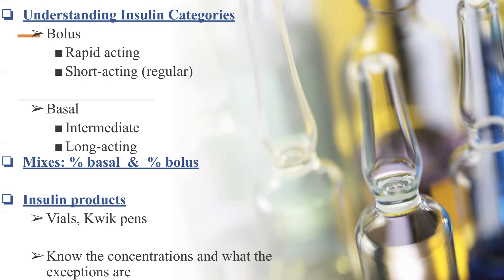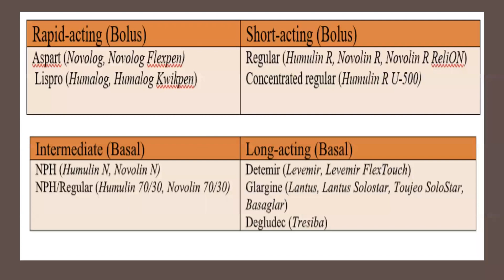We need to know the types of insulin products: vials and quick pens. We also need to know the concentrations and what the exceptions are. Looking at the categories, under rapid acting you need to know the brand and generic names. We have aspart, which is also Novolog, and the Novolog FlexPen.